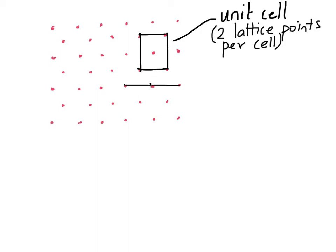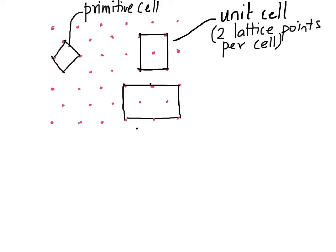I leave it as an exercise to figure out how many lattice points another example unit cell contains. And here is another one which is very special because it contains exactly one lattice point per cell. For this reason, this smallest unit cell is called a primitive cell. The primitive cell is the smallest possible unit cell you can imagine for a given lattice, containing exactly one lattice point.